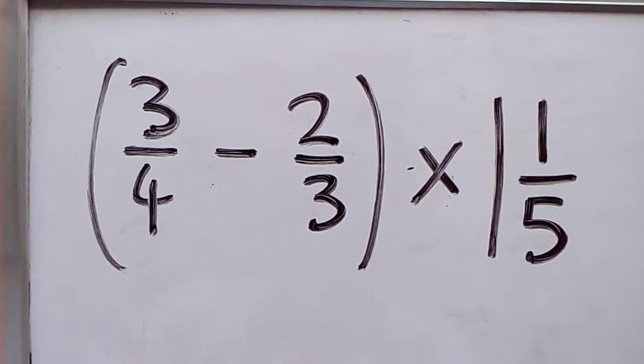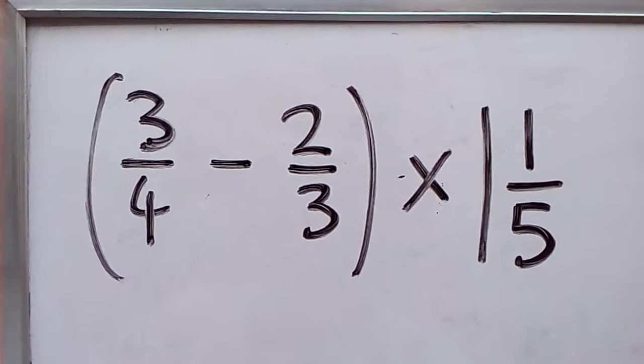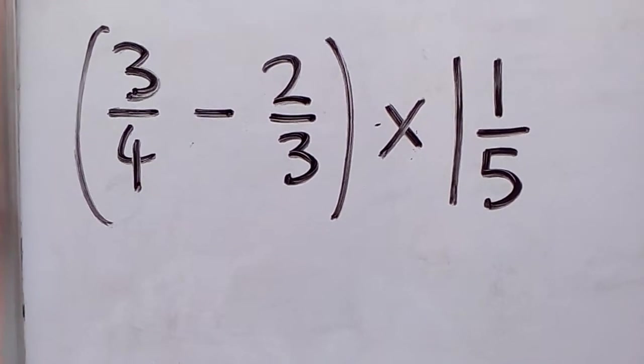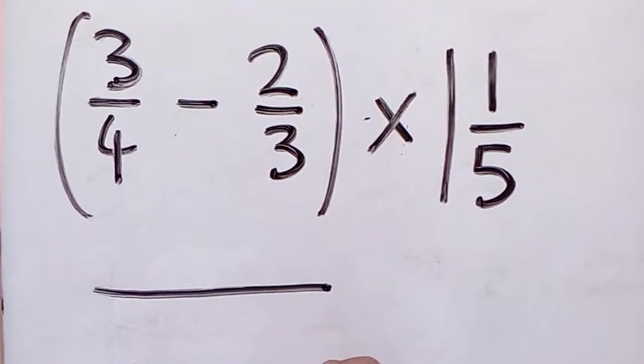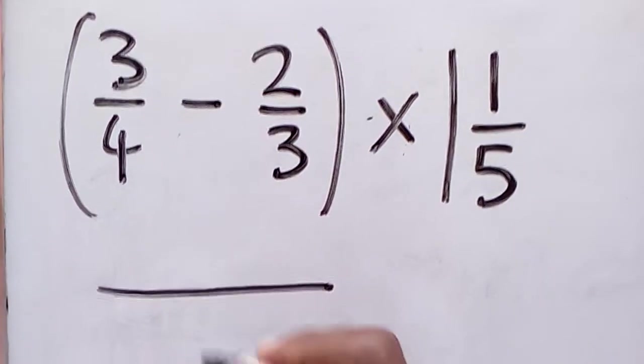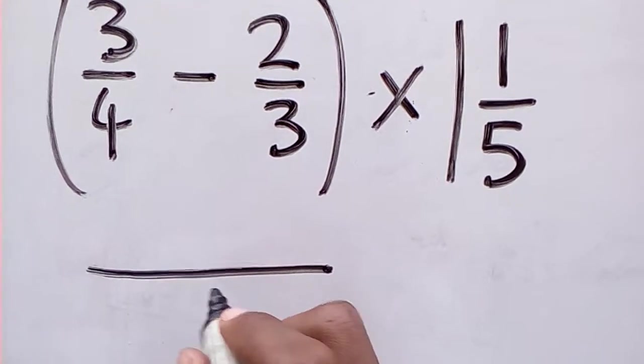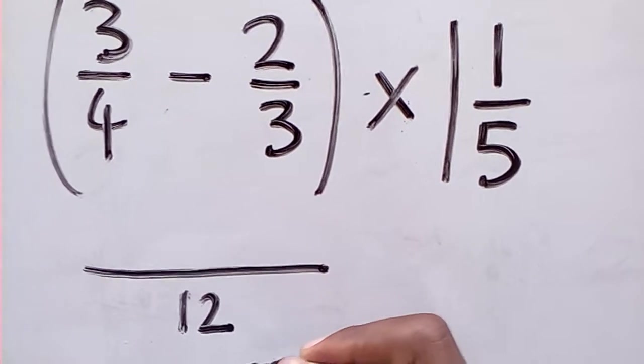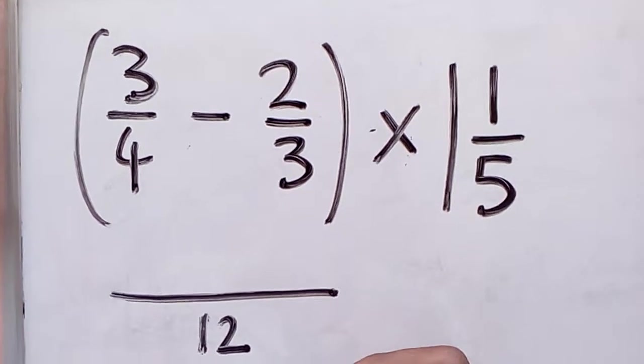Subtraction is going to take the first operation because it's in the brackets, so let's quickly attend to subtraction. I'm going to draw my very popular horizontal line and I'll find the LCM of 4 and 3, which in this case is 12. It's not all the time that LCM is the product of two numbers, you need to take note of that.